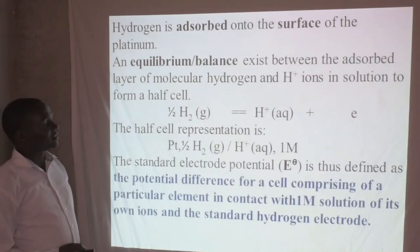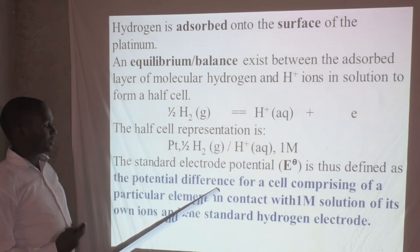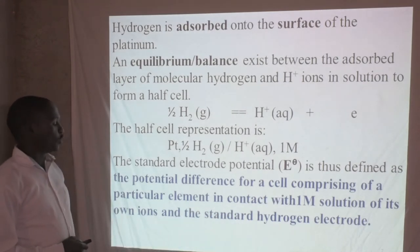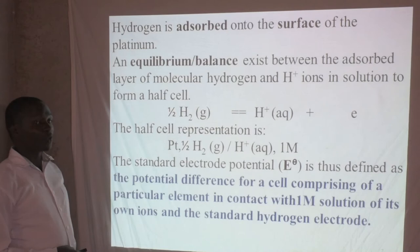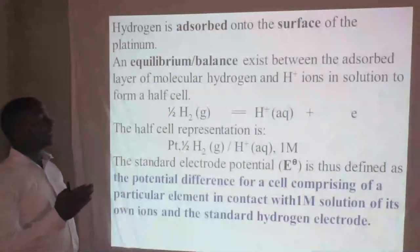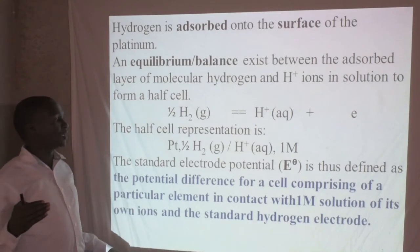The standard electrode potential is defined as the potential difference for a cell comprising a particular element in contact with a one molar solution of its own ions, and the standard hydrogen electrode. We use hydrogen as the standard electrode because of specific conditions it satisfies. We connect the hydrogen cell and the cell of the element whose standard electrode potential we want to measure — the difference between the element in one molar of its ions and the standard hydrogen electrode.